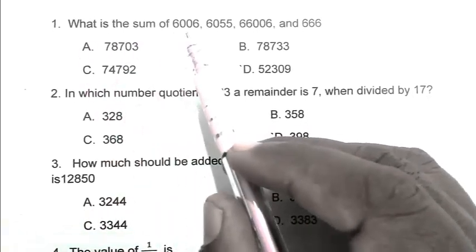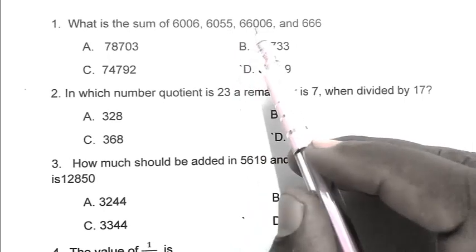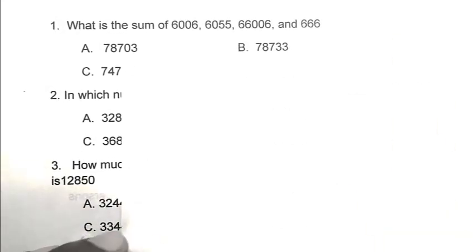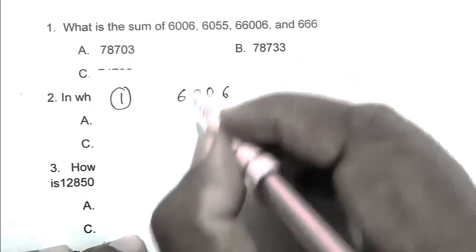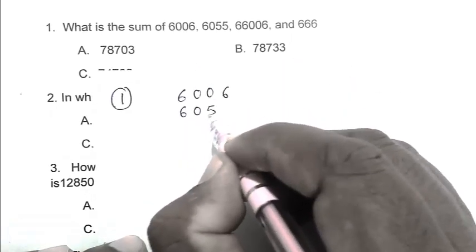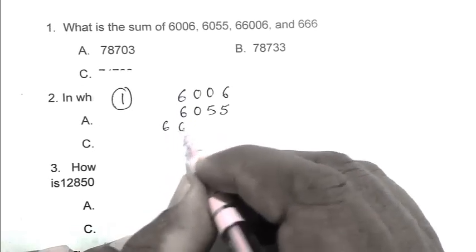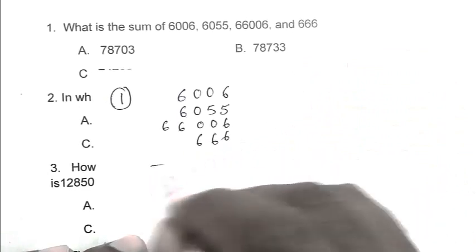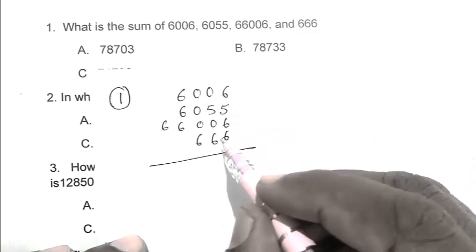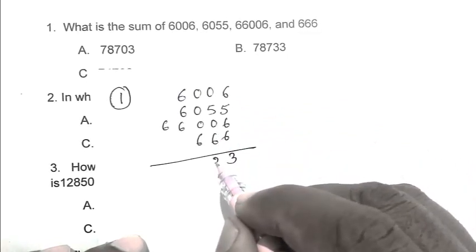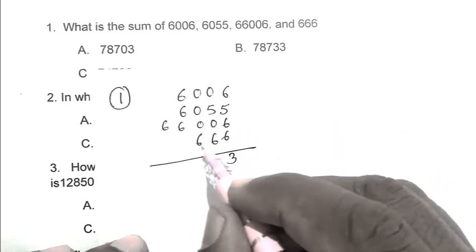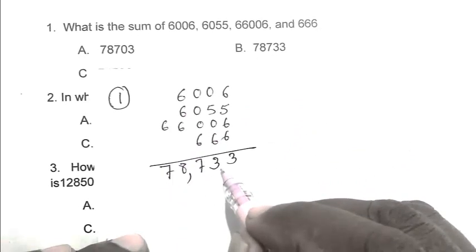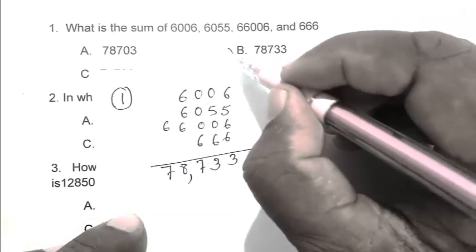Question number 1. What is the sum of 6006, 6055, 66006 and 666? So friend, we can calculate the sum: 6006 plus 6055 plus 66006 plus 666. Working through the addition — carry 2, giving us 78,733. So friend, B is the right answer.